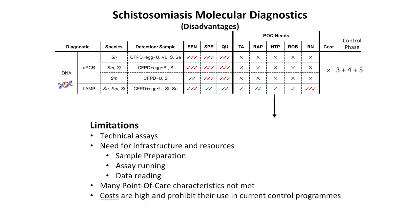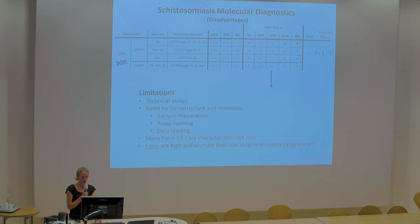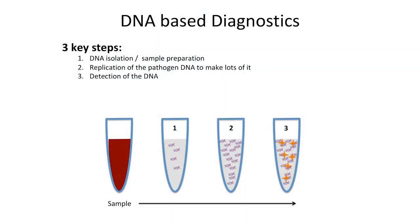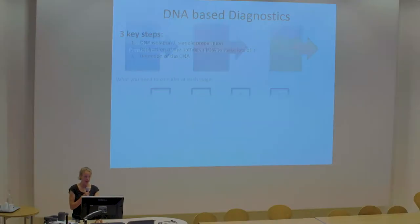However, qPCR and LAMP have limitations. They are often very technical, requiring infrastructure and resources. One of the big hurdles is sample preparation, assay running time, and interpreting the data, so the point-of-care criterion is often not met. The cost is also high, and this is really stopping their use in control programs. The three key steps in developing a molecular diagnostic are: DNA isolation and sample preparation, targeting and replicating the DNA, and then detection of the DNA.